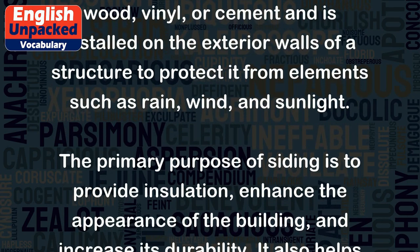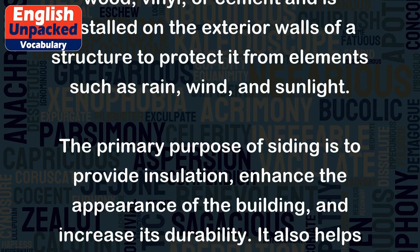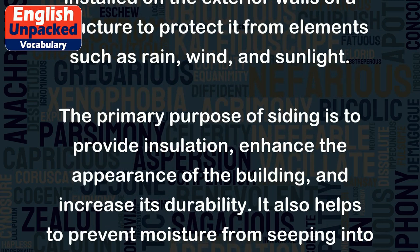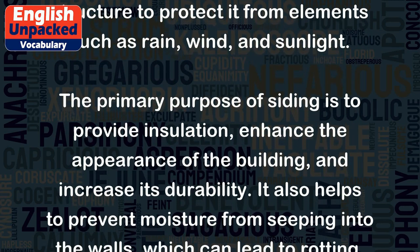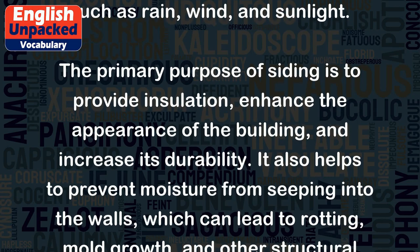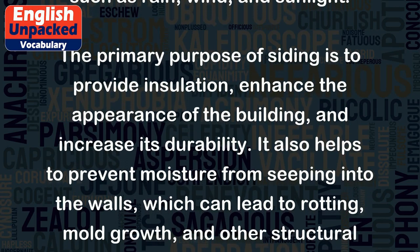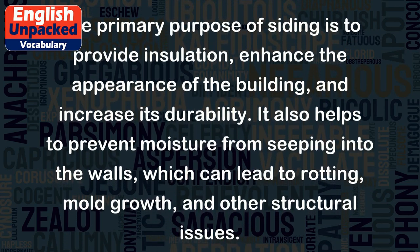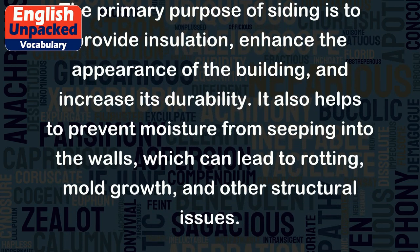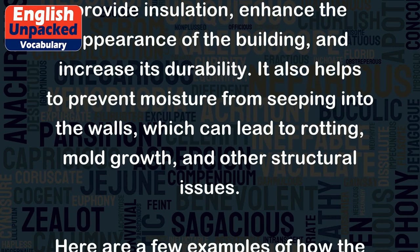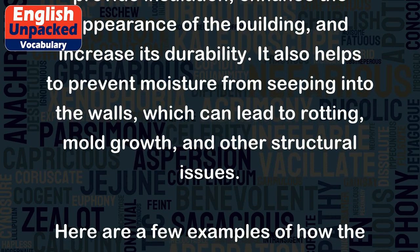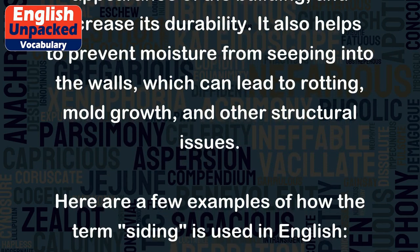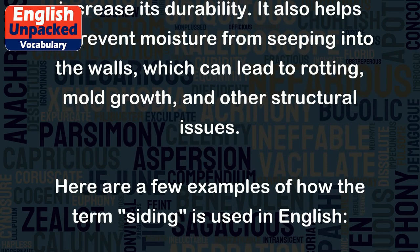The primary purpose of siding is to provide insulation, enhance the appearance of the building, and increase its durability. It also helps to prevent moisture from seeping into the walls, which can lead to rotting, mold growth, and other structural issues.